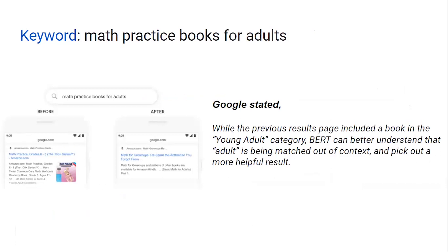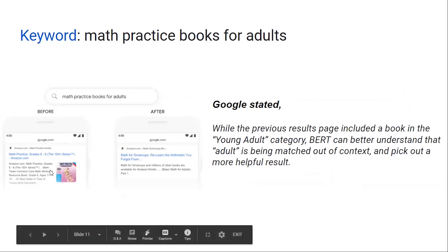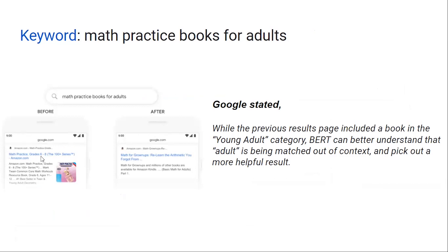Here is another example: Math Practice Books for Adults. If you look at Google before BERT, you see the math practice results are for 6th to 8th grade — not for adults. But Google has had a change in the algorithm. Now the result in the math search has grown up — results for adult learners.